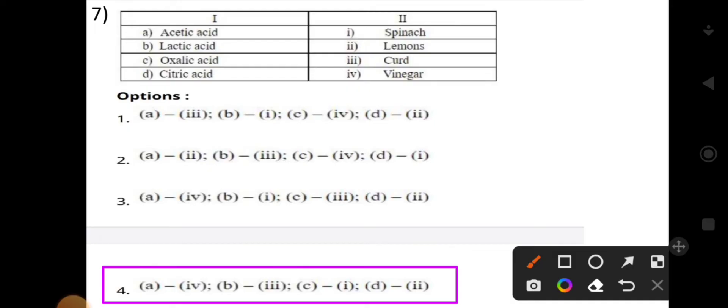Acetic acid is found in vinegar. Lactic acid is found in curd and mushroom. Oxalic acid is found in spinach, green vegetables, cabbage, broccoli, and tomatoes. Citric acid is found in citrus fruits, lemons, and oranges. That is the correct answer.